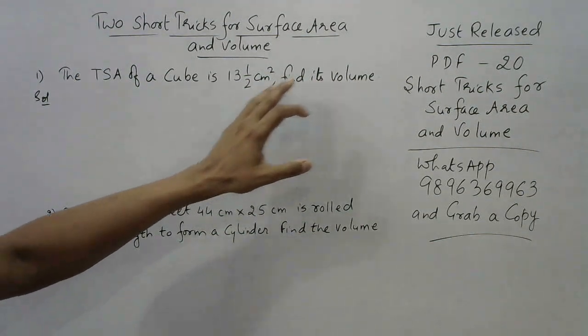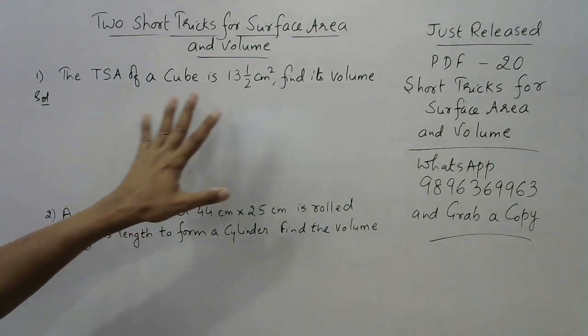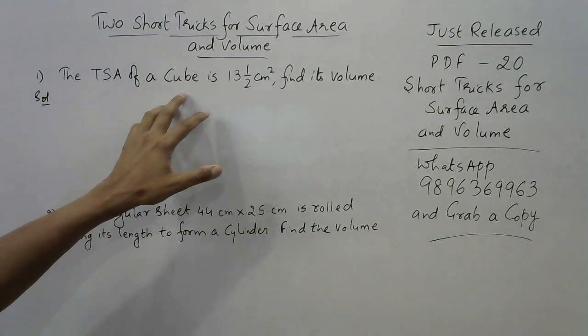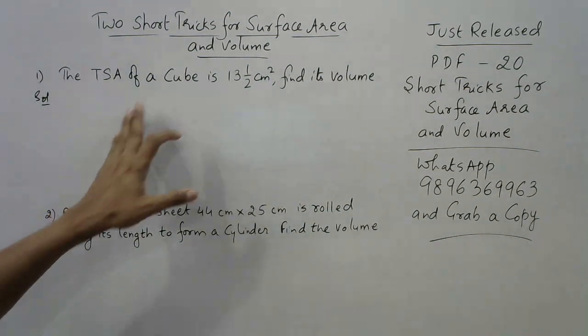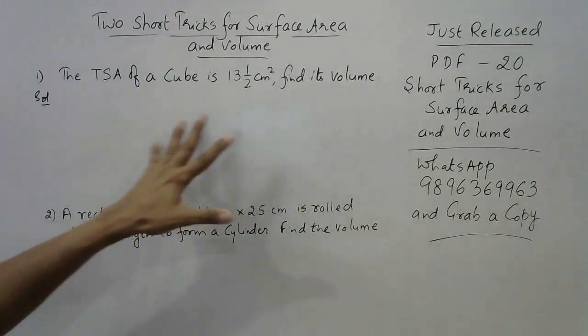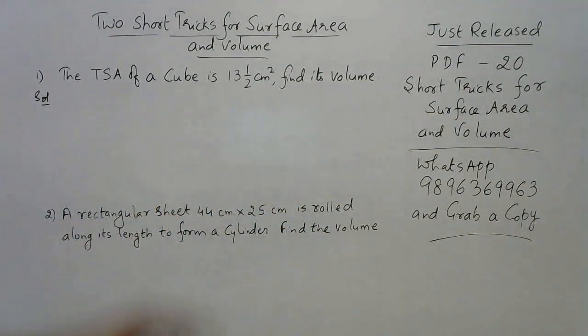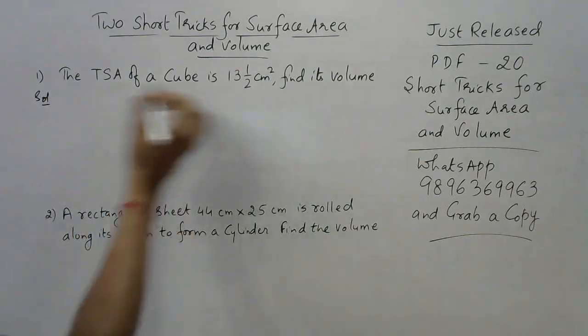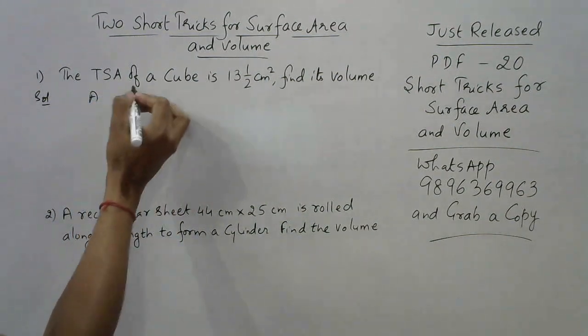In the traditional method, you put the formula of TSA of a cube and find the side of the cube first, then find the volume using the formula. That particular method consumes at least 30 to 40 seconds. But what if you have a method through which you can do it in 10 seconds? Yes, we do have a method like that.